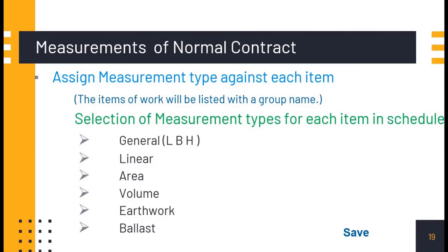Assigning measurement type against each item is a new feature. Here we select whether it is a volumetric measurement, area measurement, or linear measurement — whichever is applicable for each item. For example, if the agreement schedule has 100 items, we have to select the measurement type for all 100 items. If you do not select, by default it will be general LBH — so even without assigning, we still have options for entering measurements.